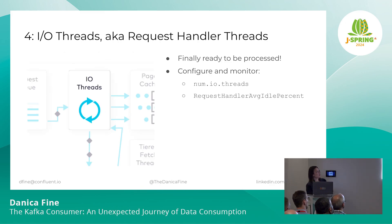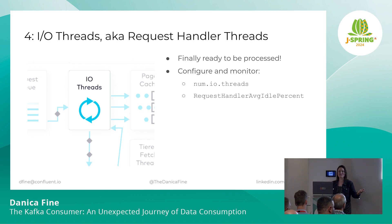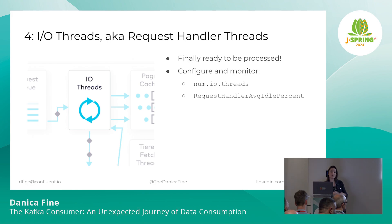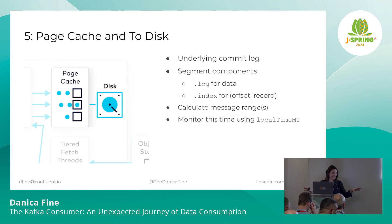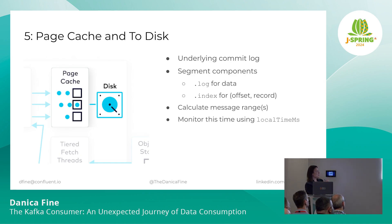The request is going to be picked up off of the request queue by an available IO thread — also called the request handler threads for the purposes of metrics. Since the IO threads have a lot of work to do — arguably all of the work of fetching the data from disk — you might want to configure how many there are. You can change the number using num.io.threads; the default is eight. You should also monitor how the IO threads are performing using request.handler.avg.idle.percent, ranging from zero to one, and you want that to be closer to one.